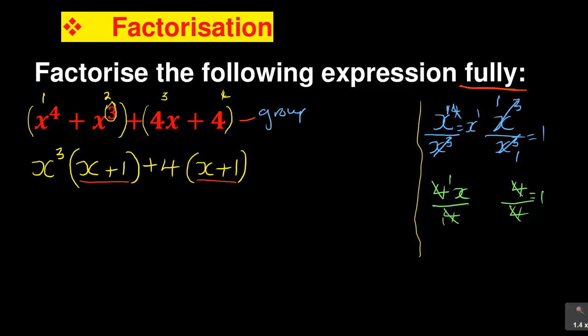You need to come up with two brackets which are the same. Now take that bracket as x plus 1, and what is outside the bracket, you have x cubed and you have 4. So this is outside the bracket, and that is the second bracket we're going to come up with, which is x cubed plus 4.